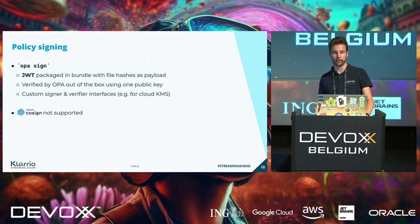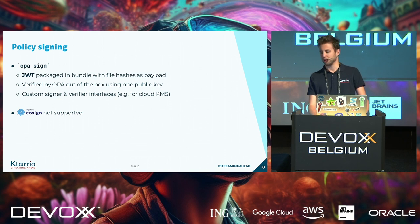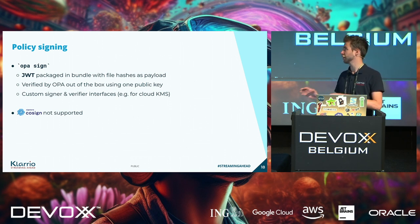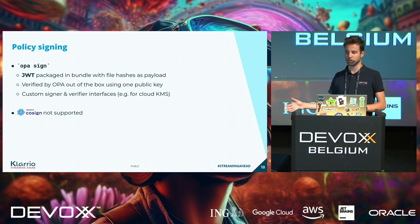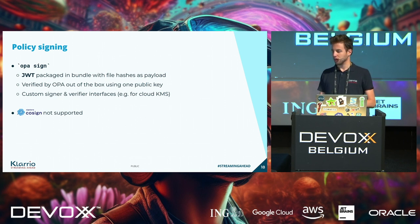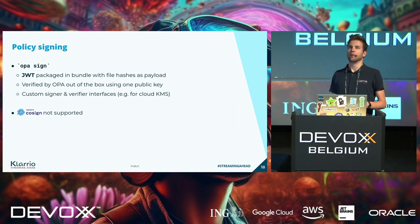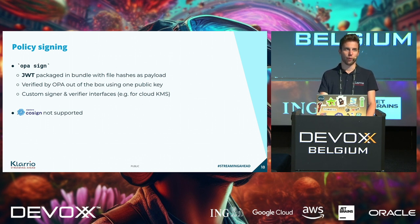When replicating your bundle all over the place, you might start getting concerned about integrity. OPA has that covered with the OPA sign command, which lets you sign a policy bundle, producing a JWT you can package into the bundle that will be verified by a configured key in your OPA instance. Key management here is somewhat limited, but you can also implement a custom interface to integrate with your cloud key management solution. If you're using OCI, you might want to use the same signing approach as container images, but unfortunately that's not supported out of the box — OPA won't verify those signatures. OPA sign will work for most people.